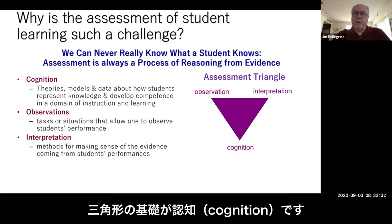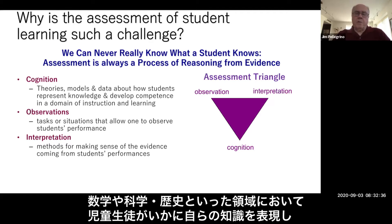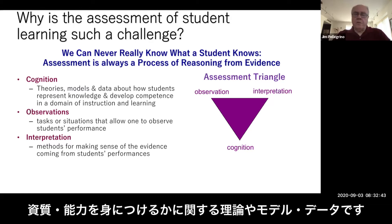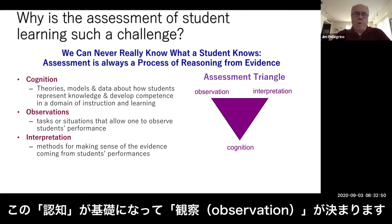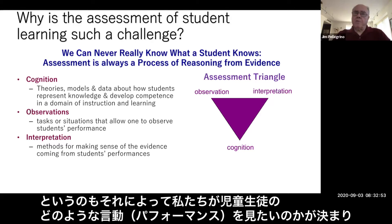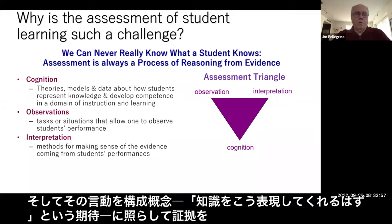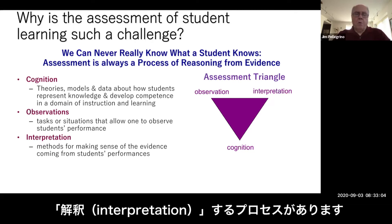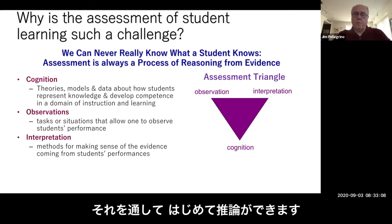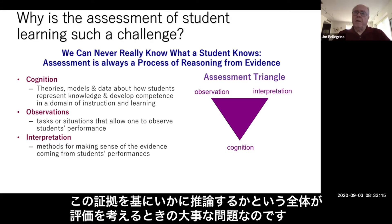The first element is cognition — theories, models, and data about how students represent knowledge and develop competence in a domain of instruction and learning, such as mathematics, science, or history. That foundation drives the observations, helping us identify the tasks or situations that will allow us to observe students' performance. From that performance we make inferences through an interpretation process — a way of making sense of the evidence and connecting it back to the underlying conception about the nature of knowledge we are interested in. This whole issue of reasoning from evidence is fundamental when we think about assessment.